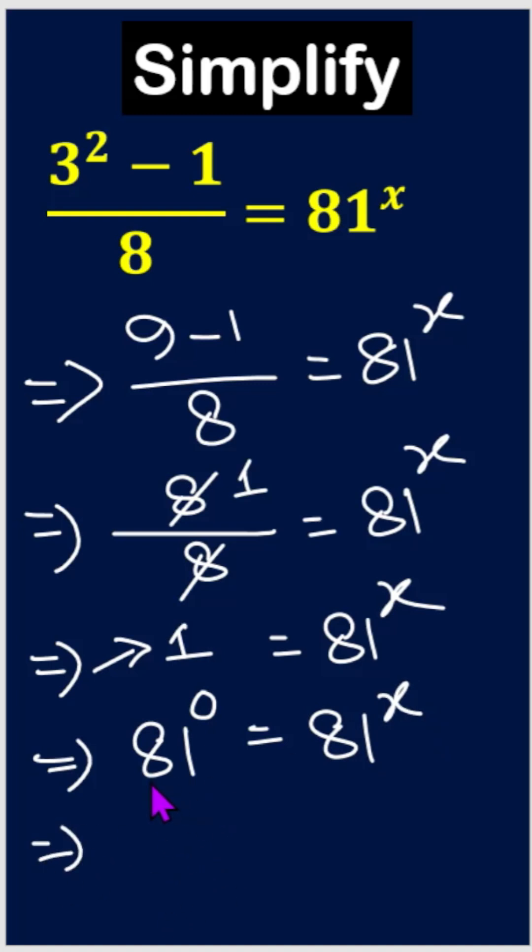Now here the bases are same, 81 and 81, so here is 0 equals x. That means x equals 0 and this is our answer.